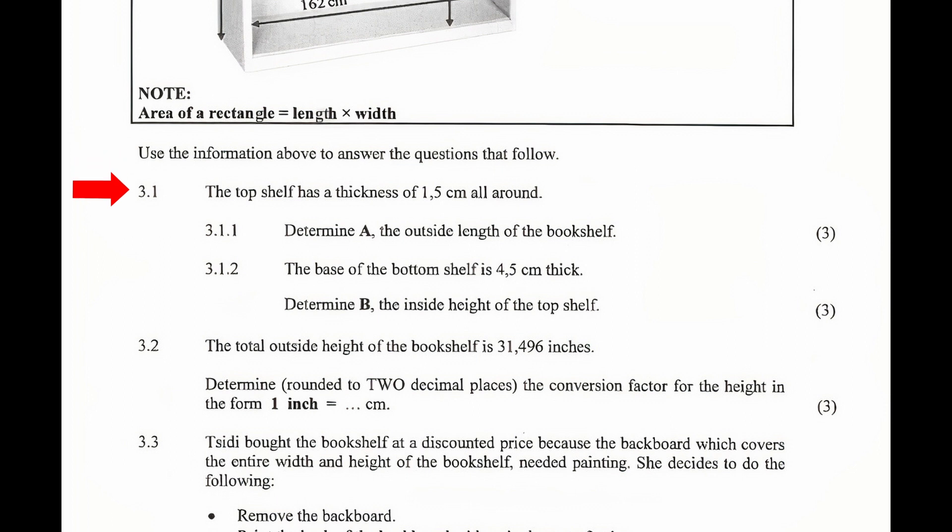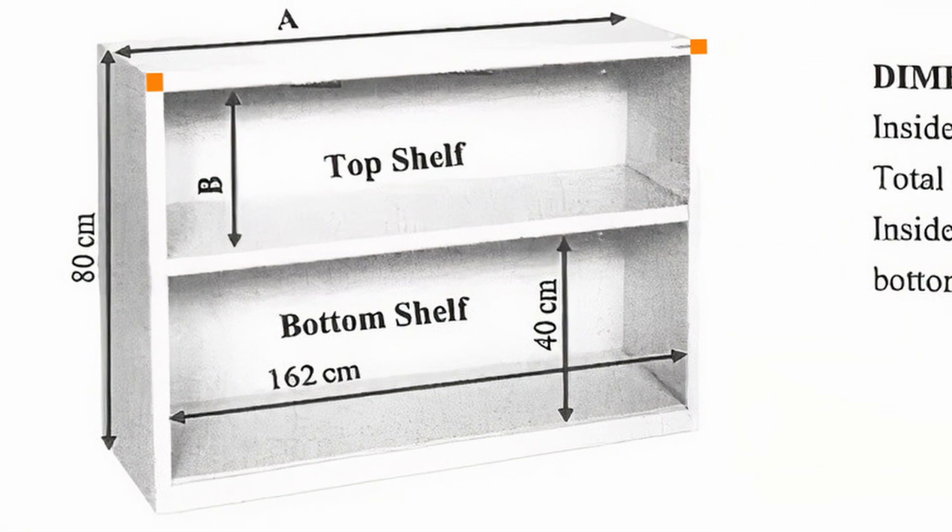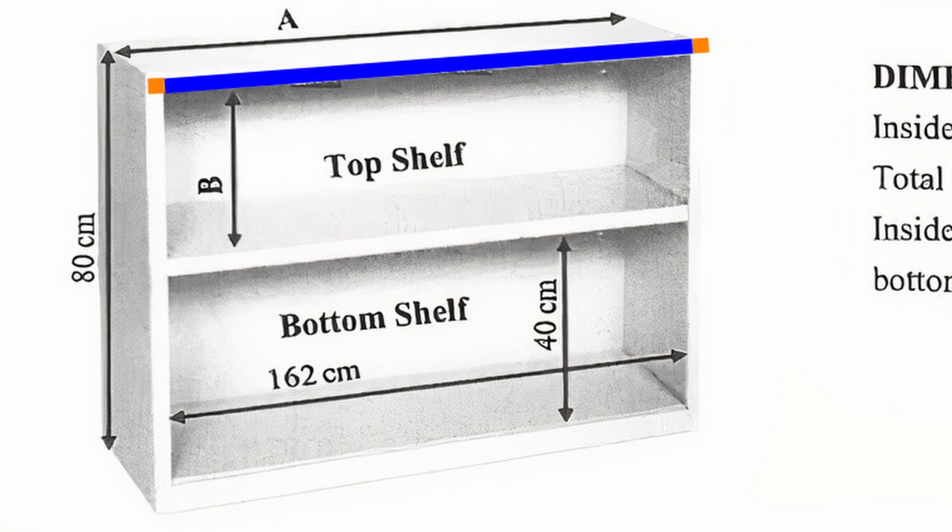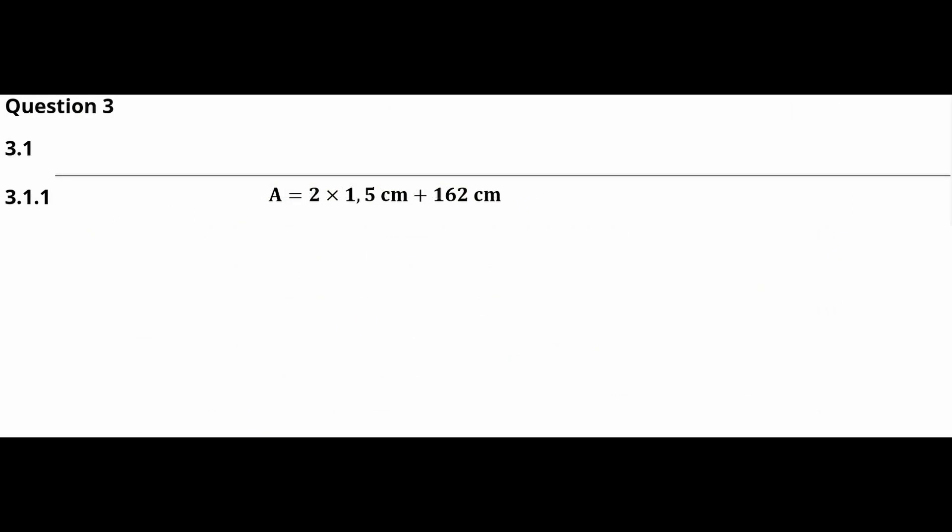3.1: The bookshelf has a thickness of 1.5 cm all round. 3.1.1 Determine A, the outside length of the bookshelf. From the illustration, the inside width of the bookshelf is 162 cm. The outside length of the bookshelf is equal to the thickness of both sides of the shelf plus the inside length. So given that the thickness of the bookshelf is 1.5 cm, the outside length A is equal to 2 multiplied by 1.5 cm plus 162 cm.